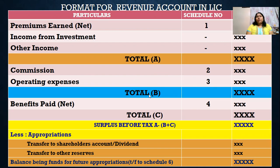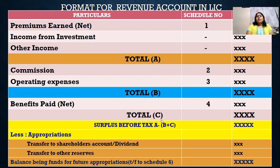Total B is the combination of commission — schedule number two — and operating expense — schedule number three. Then once you complete total B, we move on to total C. It's about the benefits paid out by the life insurance company, either in the form of claims, surrenders, annuities, or bonus. The summation of B and C has to be compared with total A to know the surplus before tax.